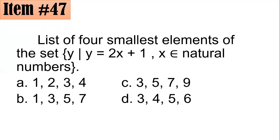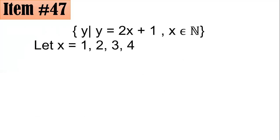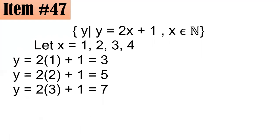If you have this, all you have to do is, since you're looking for the first four smallest, the four smallest natural numbers are 1, 2, 3, and 4. So substitute X with 1, 2, 3, 4 and evaluate to solve for Y. So if X is 1, you have 2 times 1 plus 1 which is 3. If X is 2, you have 2 times 2 plus 1 which is 5. If X is 3, you have 2 times 3 which is 6 plus 1 gives us 7. And lastly, if X is 4, you will have 2 times 4 which is 8 plus 1, you have 9. Hence, the first four or the four smallest elements or the first four elements of this set is 3, 5, 7, 9, letter C.